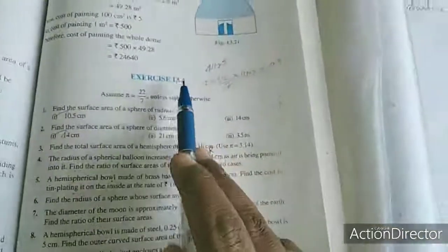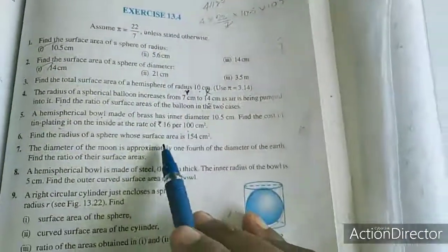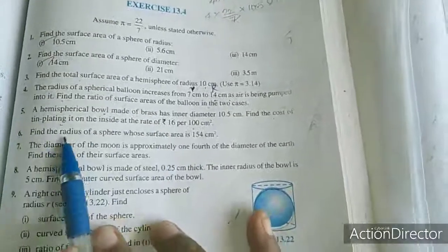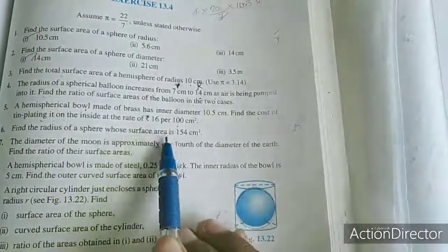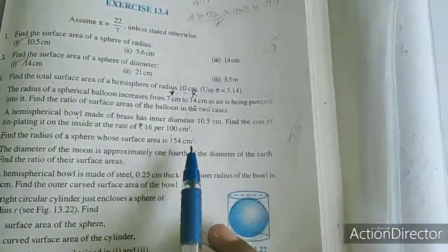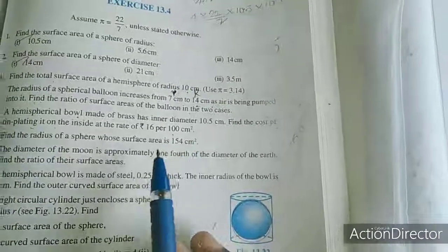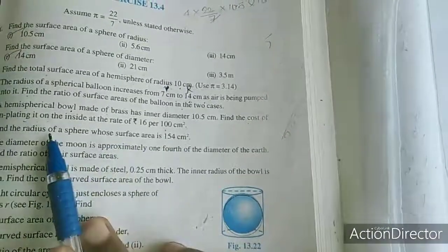Hi, dears. In last class, we completed exercise 13.4 up to 5 terms. Now, the 6th sum: Find the radius of the sphere whose surface area is 154 cm².